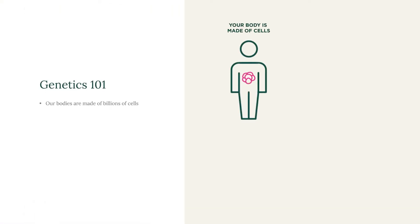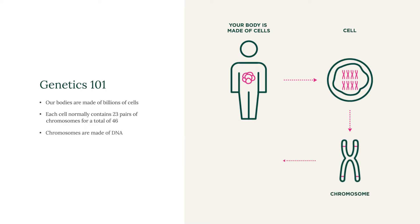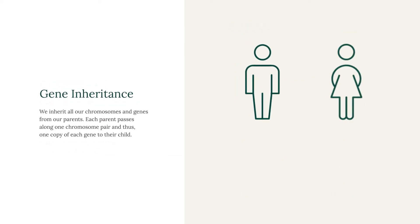Our bodies are made up of billions of cells, and each nucleated cell normally contains 23 pairs of chromosomes, for a total of 46. Chromosomes are made up of DNA. Our DNA is comprised of even smaller sections known as genes, which contain the code and instructions for our individual characteristics such as eye colour and height. We inherit all of our chromosomes and genes from our parents, and each parent passes along one chromosome from a pair, and thus one copy of each gene, to their child.